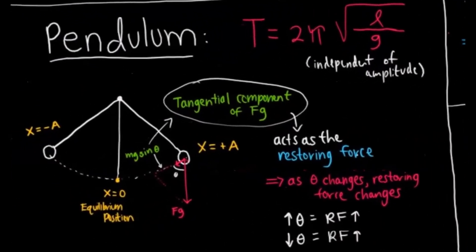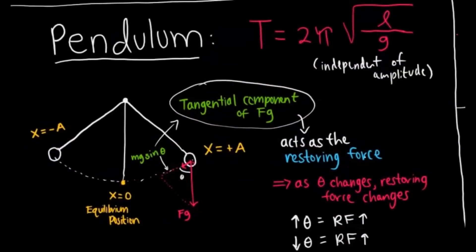So let's first look at a pendulum. The equation for a pendulum is 2π times square root of length of the pendulum over the gravitational constant.